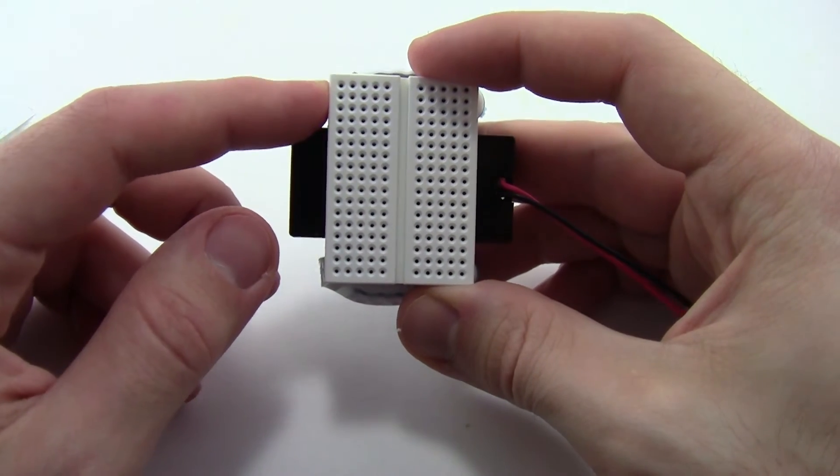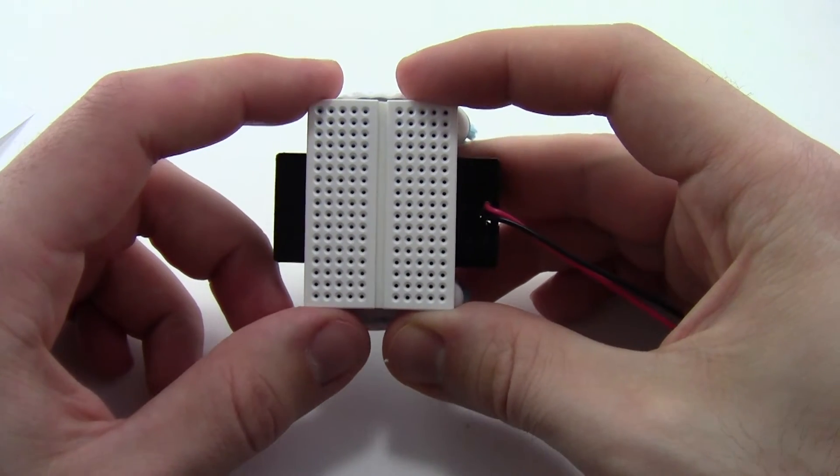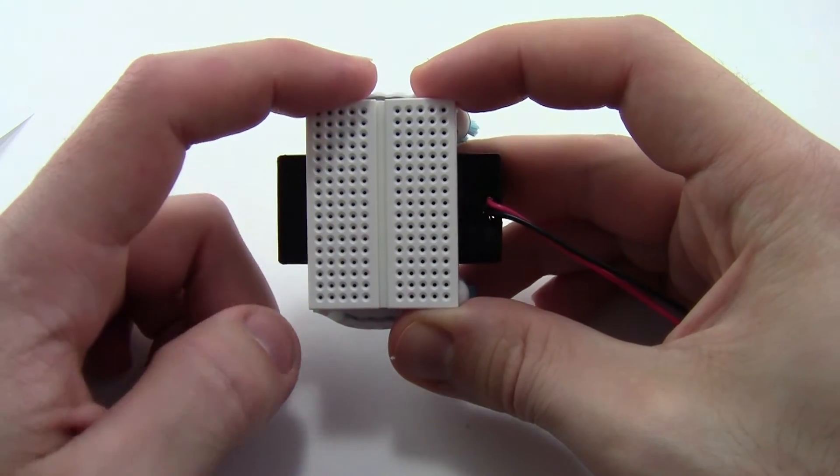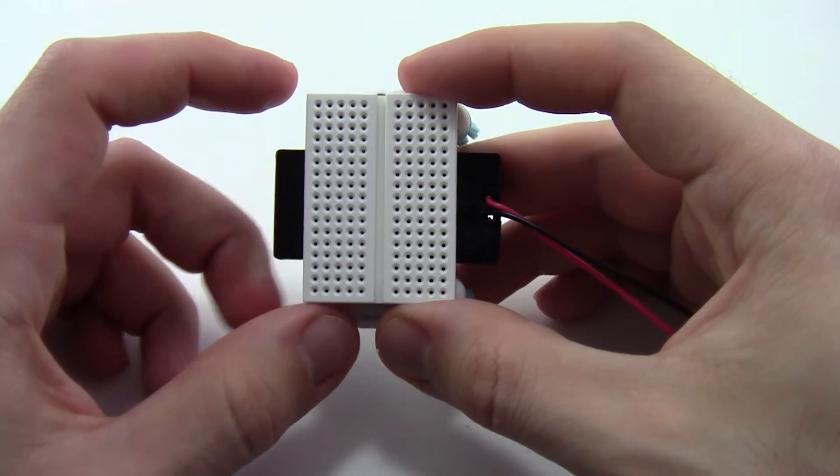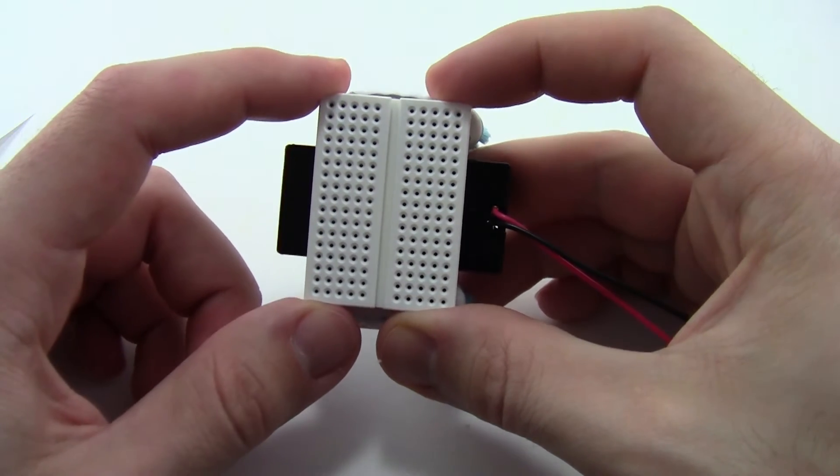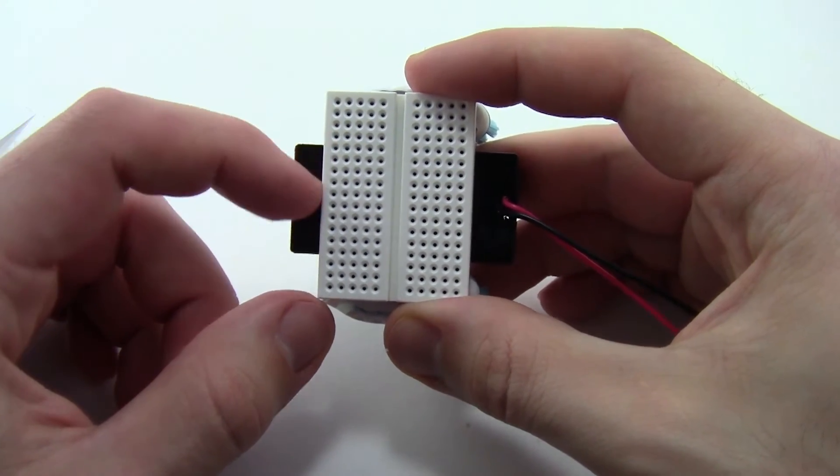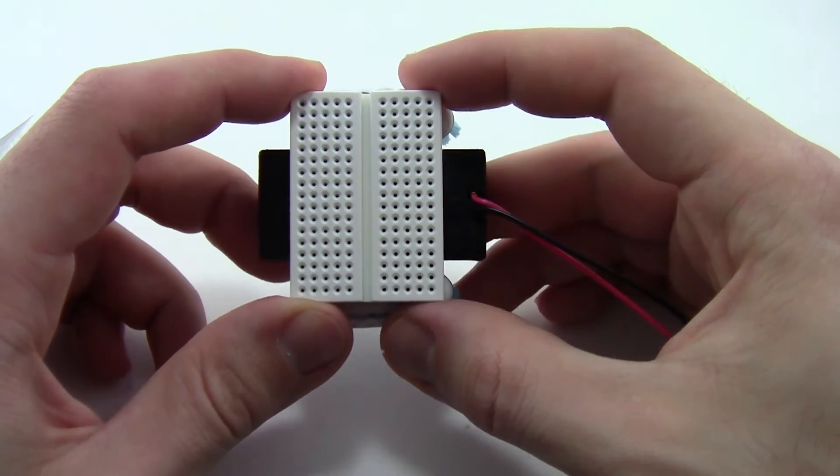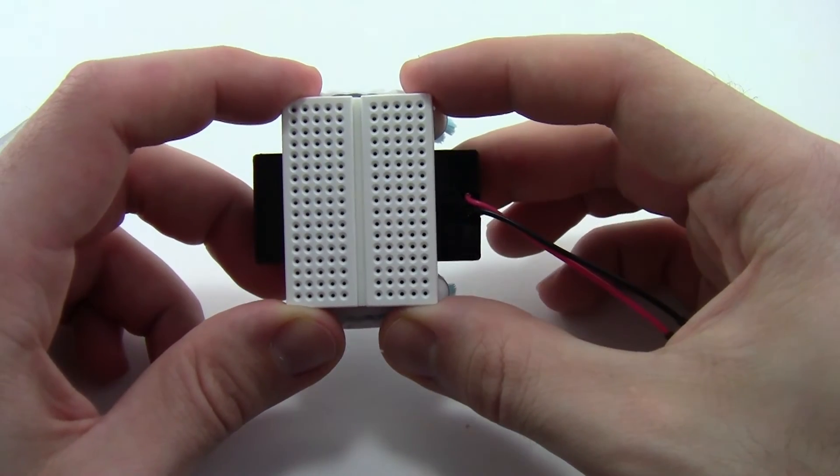Now, one unfortunate thing about these small breadboards is that they do not have labels printed on them. Many larger breadboards have numbers for the rows and letters for the columns. These tiny breadboards don't have enough room for that printing. So if you want, you can take a fine tip marker and add numbers and letters. There might not be enough space to label all of them, but maybe you could label every fifth row, just to make it a little easier for your students to keep track.